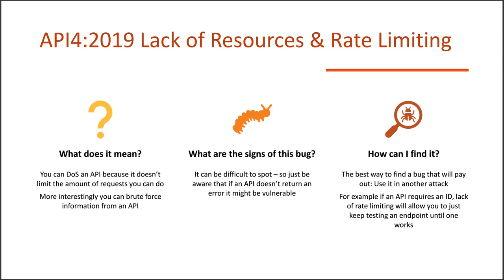The signs of this bug? You honestly can't tell from the outside — it's difficult to spot. Just be aware that this can be an issue; the best way to test it is to try it and see if it has lack of rate limiting. The problem is that most people don't consider this a security vulnerability unless you can use it in another attack — for example, if an API requests an ID you can brute force it just by testing until it works, or test things like logging into people's accounts.